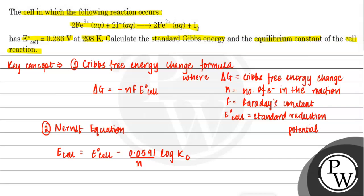Here, E cell equals E° cell minus 0.0591 divided by n times log of equilibrium constant Kc. Where E cell is reduction potential, E° cell is standard reduction potential, n is number of electrons involved in the reaction, and Kc is equilibrium constant.